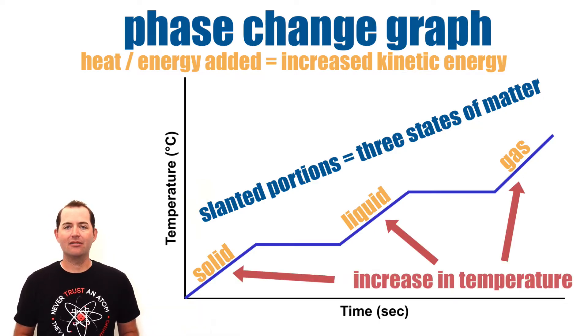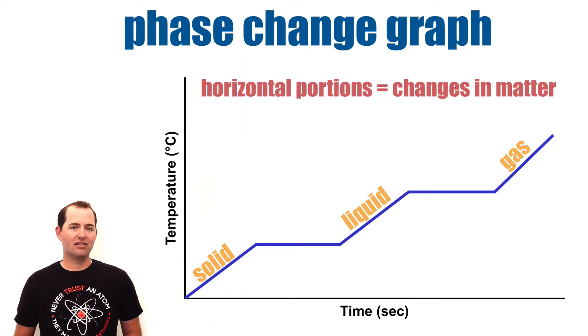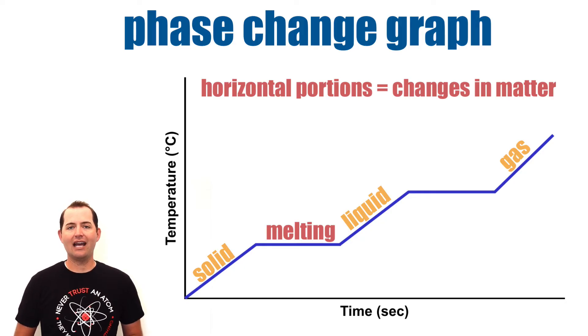While this is happening, the particles or molecules in the substance will be increasing in speed. The horizontal parts of the graph are representative of a change in the state of matter. From solid to liquid is melting, and from a liquid to a gas is evaporation or boiling.